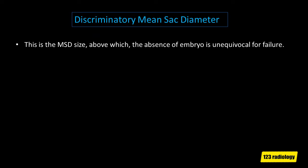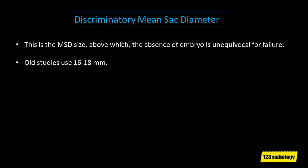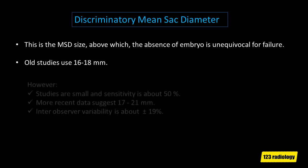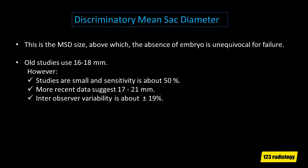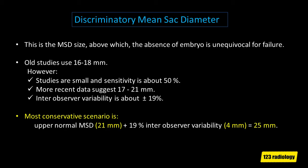Discriminatory mean sac diameter is the mean sac diameter size above which the absence of an embryo is unequivocal for failure. Some studies use 16 mm and others use 18 mm; however, these studies are small and sensitivity is about 50%. More recent data suggest up to 21 mm, with inter-observer variability of about 19%. So the most conservative scenario is: the upper normal mean sac diameter is 21 mm, plus 4 mm for the 19% inter-observer variability.